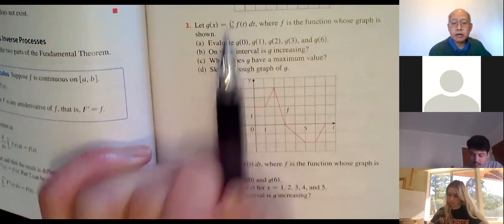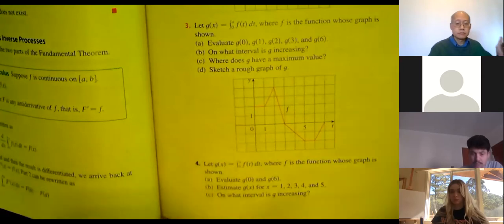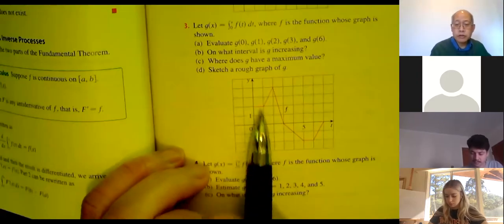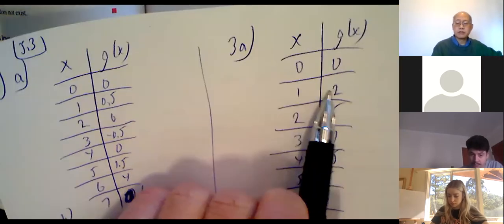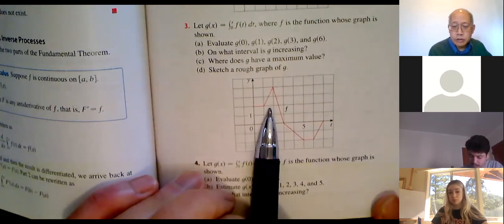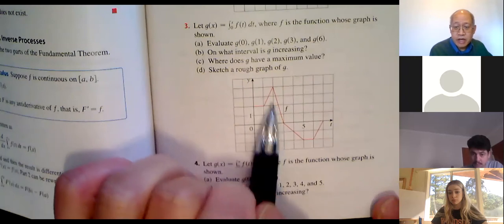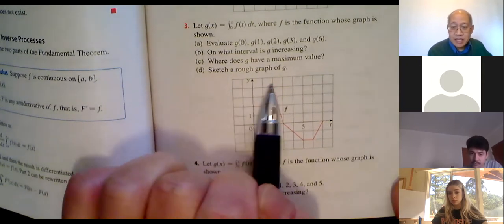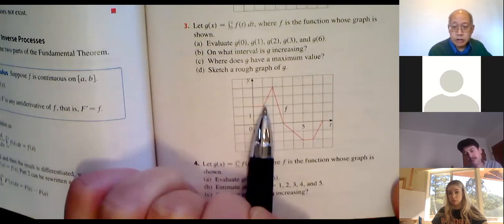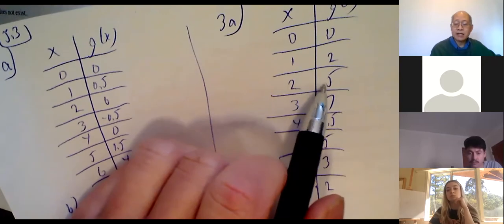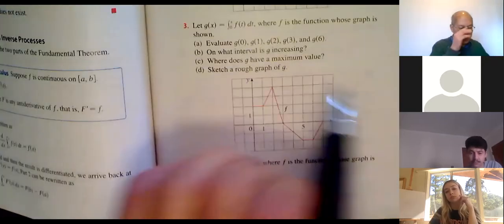g of 0: the integral from zero to zero is 0. g of 1: I pick up one two squares, so g(1) = 2. g of 2: between one and two I pick up two squares plus a triangle — one-half base times height gives one more — netting three more. Adding three to the two I already have gives g(2) = 5. The net area under the curve from zero to two is five units.